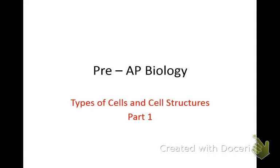Hey, and welcome to Pre-AP Biology. As you listen to these lectures, you need to have a pen and a highlighter so that you can take additional notes on the outlines that you've been provided. Make sure everything that I write down, you write down, and try to remember what you're listening to so that tomorrow in class we can discuss the outline. Go ahead and get out the first outline — it should say Types of Cells and Structures, Part 1. This first part is a little bit about cell theory and history.